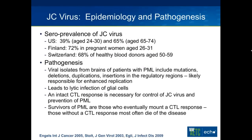The seroprevalence is about 40 percent in the U.S. by the time you're a young adult, and 65 percent when you age. In Finland, almost three-quarters of pregnant women are JC virus positive, and in Switzerland about 70 percent of healthy blood donors are positive.